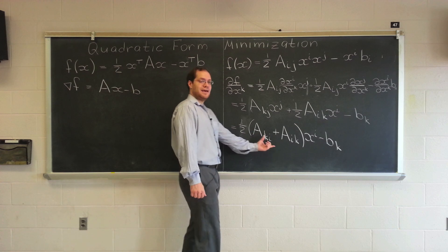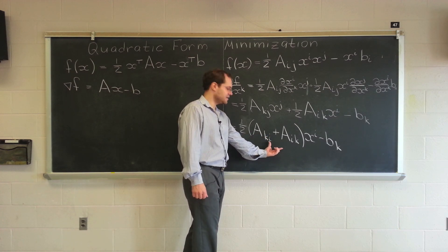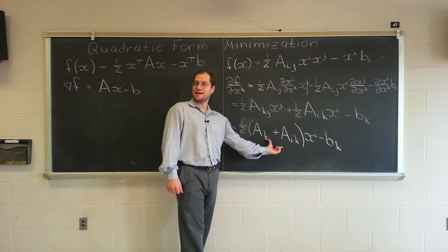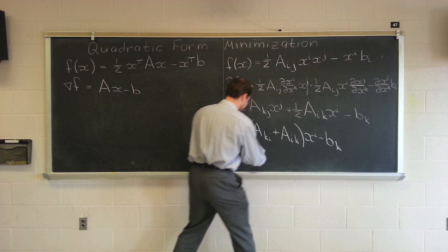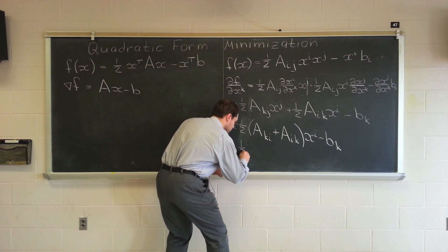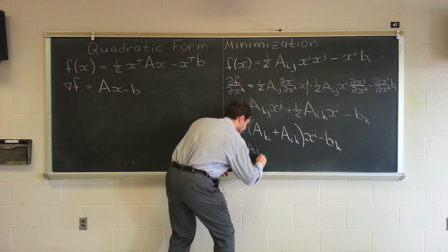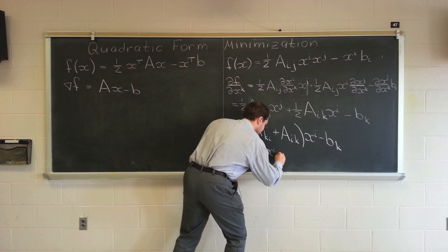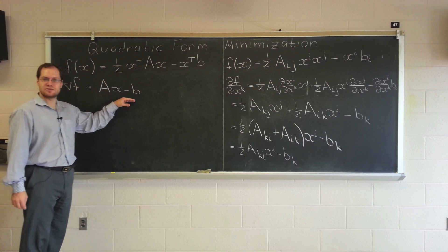Now, if A is symmetric, if A is symmetric, then these two terms are the same. Then A_ik equals A_ki. So, I will just write it in the next line. If A is symmetric, then it's A_ki x_i minus b_k. And here you have it. It's the answer that you know.